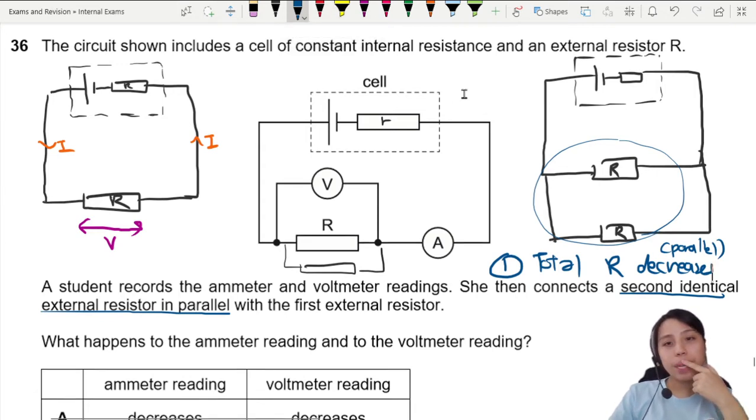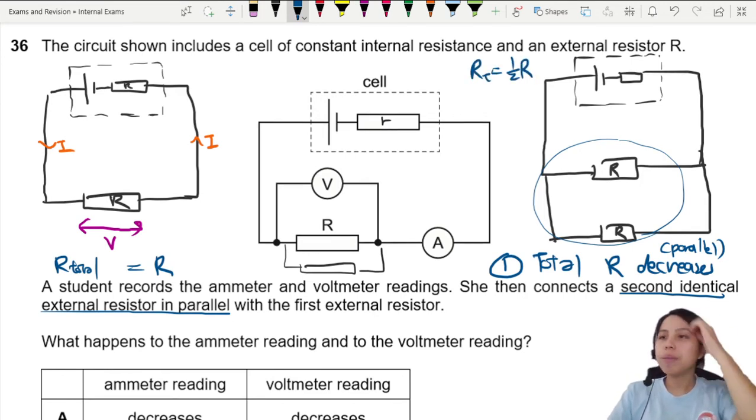If you don't believe me, you can calculate what the total resistance here is. Calculate these two in parallel—what's the R? You actually realize it's half R. Total resistance here is actually R, but once you have two in parallel, R total now becomes half of it. So it decreases.